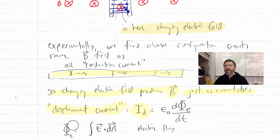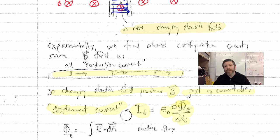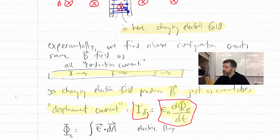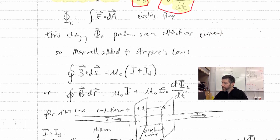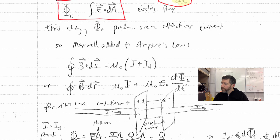Maxwell called it the displacement current and gave it the symbol I sub D. It equals epsilon naught times the rate of change of electric flux. A changing electric flux produces a magnetic field, and this displacement current can even be measured in amperes — the units are identical. Recall that electric flux is just E dot dA, so once we figure out the rate of change of that, we have the displacement current, which has the exact same effect as a regular current in terms of producing magnetic fields.